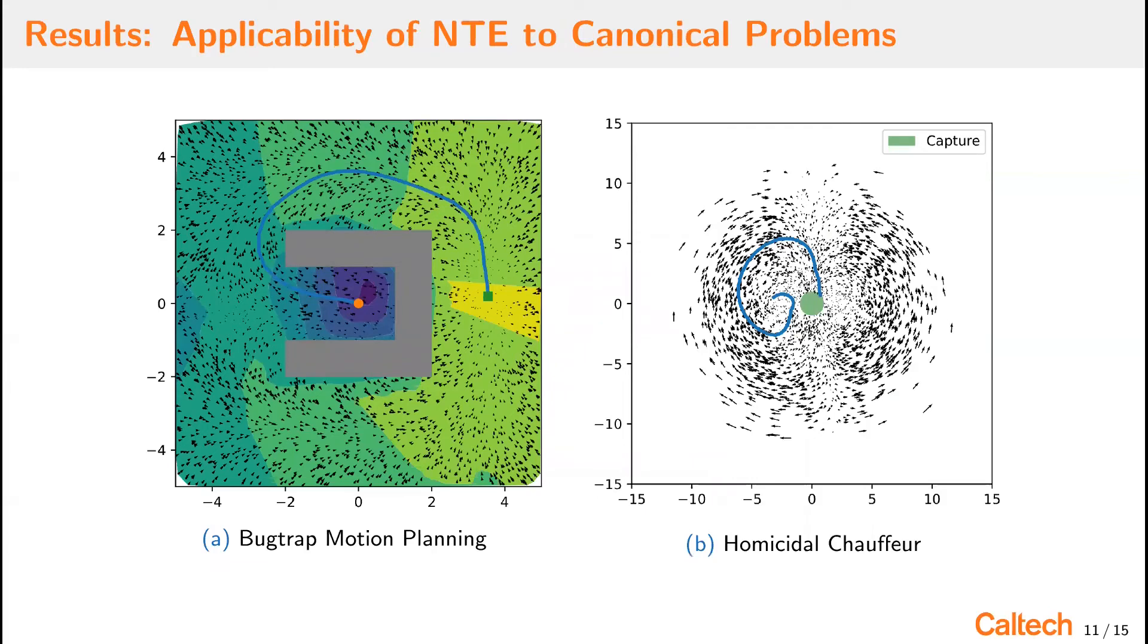Next, we discuss results of neural tree expansion applied to canonical problems. The first problem we consider is the bug trap motion planning problem, where a robot starts at the orange circle and has to go to the green square in the presence of the obstacles. NTE solution is shown in blue, which matches the intuitive optimal path. The contour plot is the neural network value function evaluated that helps guide the tree search. And the quiver plot is the policy function, which also helps guide the tree search.